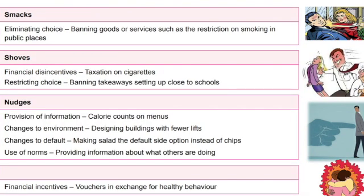Within those different types of intervention methods, above nudges we have shoves and smacks. Shoves are much more forceful. For example, a financial disincentive such as a tax on cigarettes — tobacco duty — would be a shove. Providing information about how cigarettes endanger health would be a nudge, but the indirect tax is a shove.